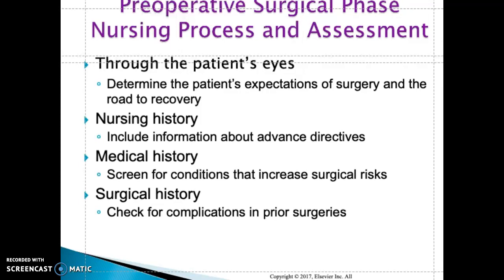Review the patient's medical history and screen for conditions that increase surgical risk. For example, a patient with CHF has increased risk for cardiac compromise post-surgery and may need IV fluids at a slower rate to prevent fluid overload. Check for complications from prior surgeries — if a patient has had complications such as anaphylactic shock, malignant hyperthermia, nausea, or vomiting, report these findings to the anesthesiologist and the surgeon.